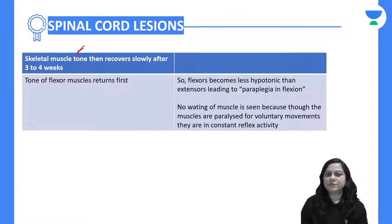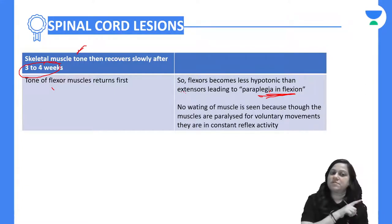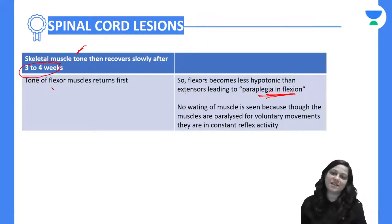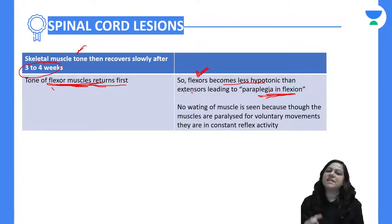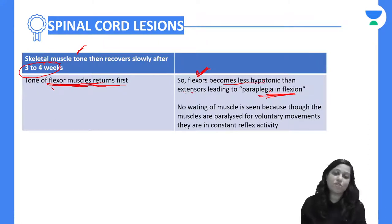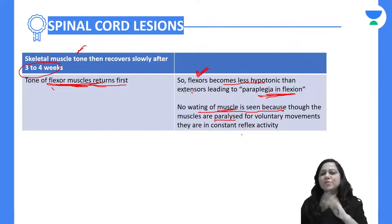Then skeletal muscle tone will recover after three to four weeks of the stage of spinal shock. Very importantly, paraplegia in flexion will occur. Tone of the flexor muscles returns first. In complete transaction, during the recovery phase, the flexors become less hypotonic than extensors, leading to paraplegia in flexion. There will be no muscle wasting because, although muscles are paralyzed for voluntary movement, constant reflex activity is present.